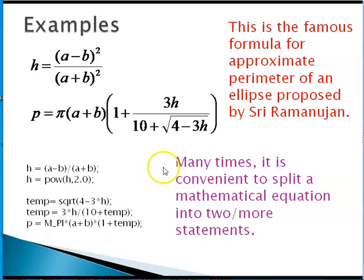Similarly, we evaluated this square root of 4 minus 3h once as temp and 3h by 10 plus temp, because this whole quantity is evaluated as temp in one statement. We can write this as 10 plus temp. 3h divided by 10 plus temp evaluates this whole quantity. Then the perimeter we evaluate as shown over here.